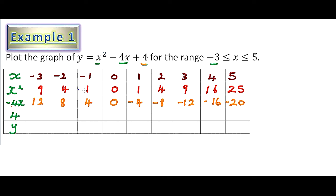The constant 4 is written throughout that row, so we have 4, 4, 4, 4, 4, 4 for all values of x.